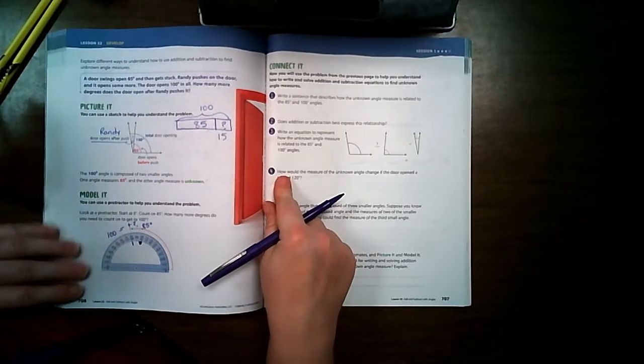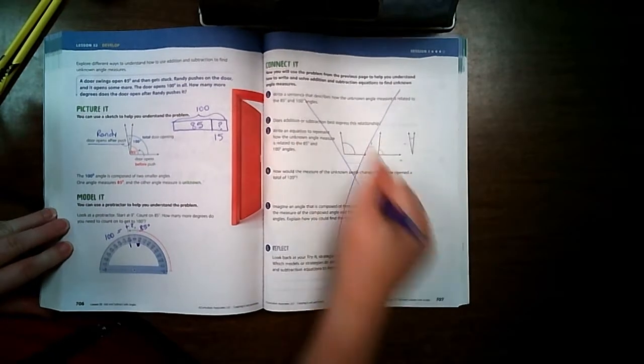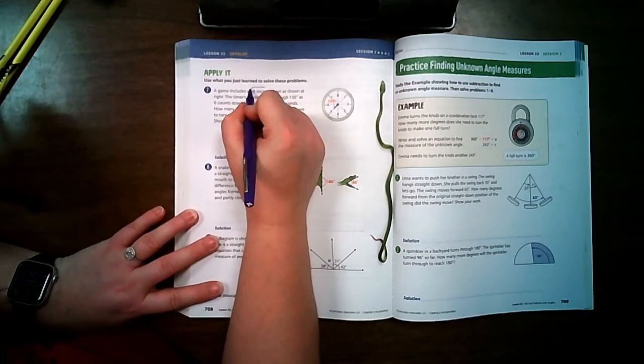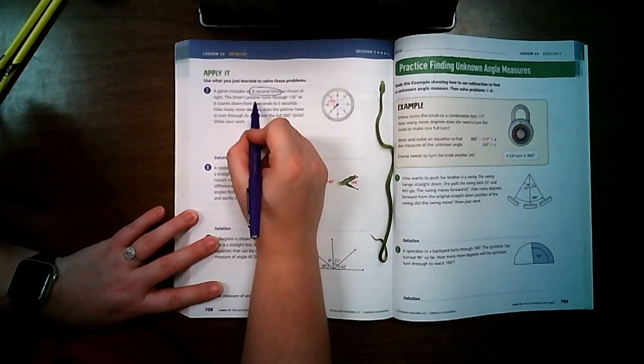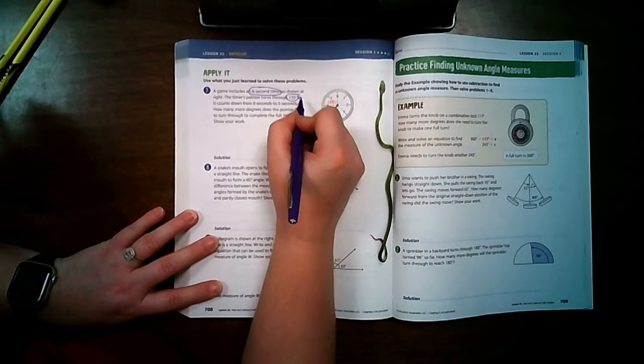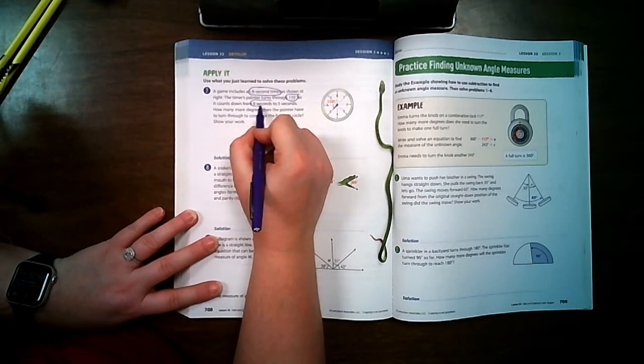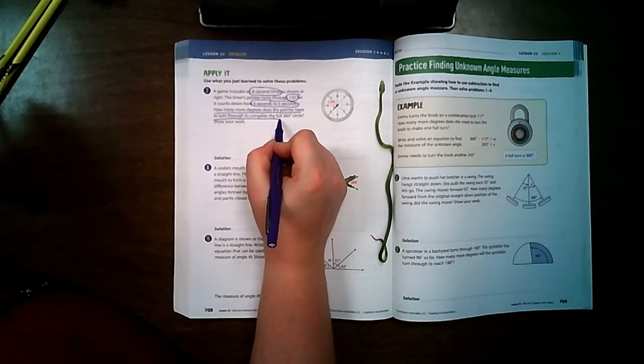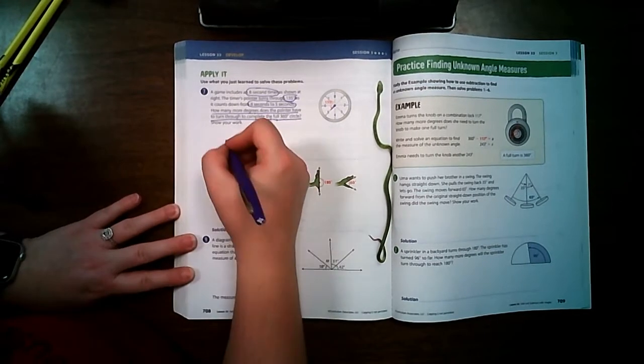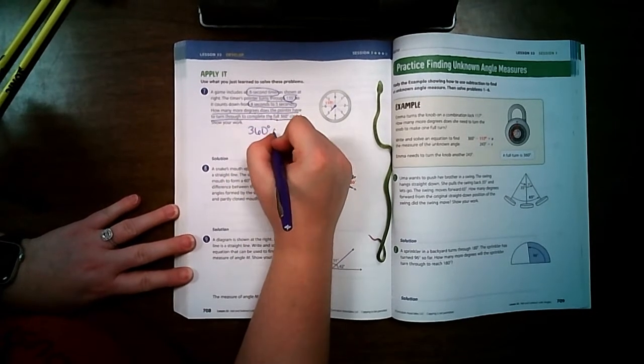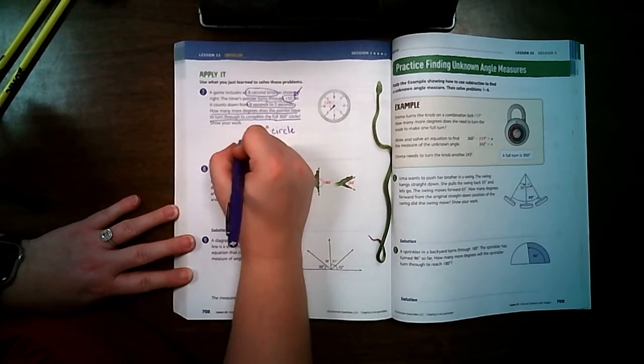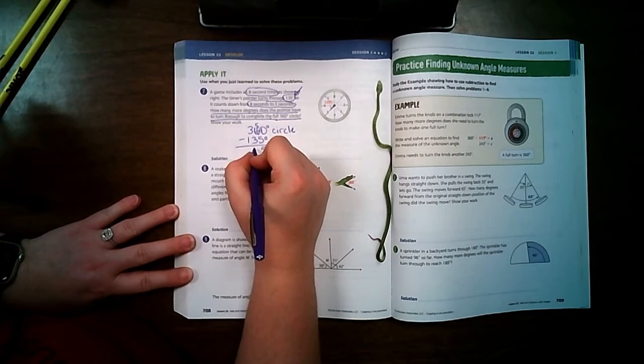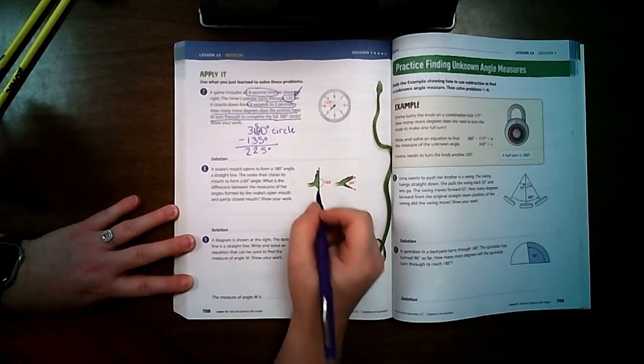We've already discussed this over here, so we're going to skip this page and go to page 708. A game includes an eight second timer as shown at the right. The timer's pointer turns through 135 degrees as it counts down from eight seconds to five seconds. How many more degrees does the pointer have to turn through to complete the full 360 degree circle? So we know that our answer is 360 degrees because that's the circle. It has already went through 135 degrees. So what is left? This is five, this is two and two, so 225 degrees.